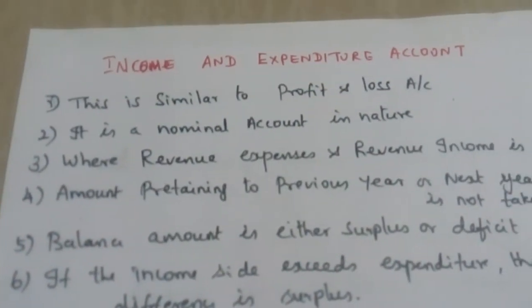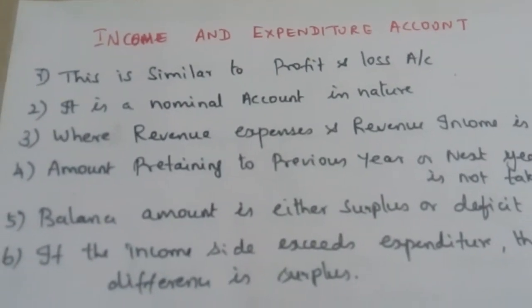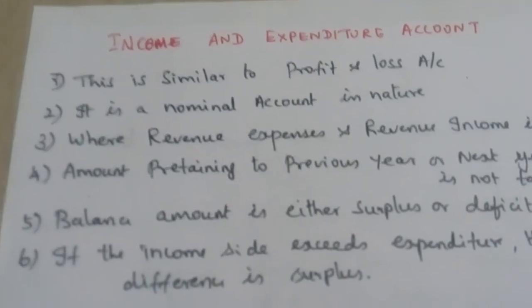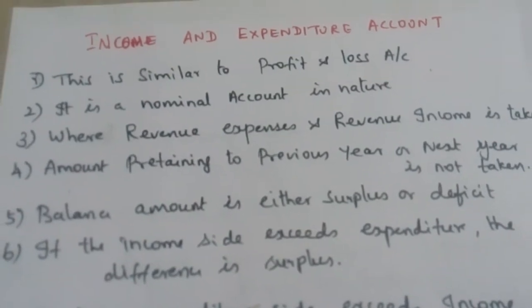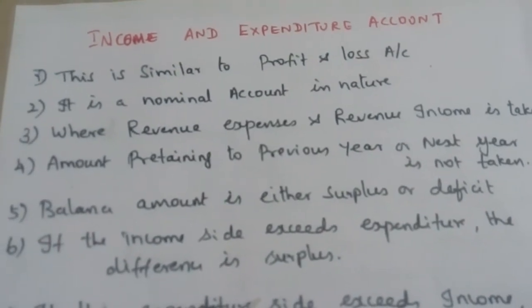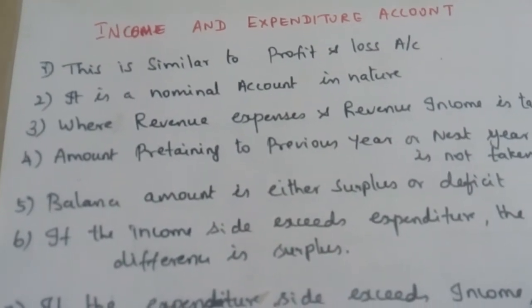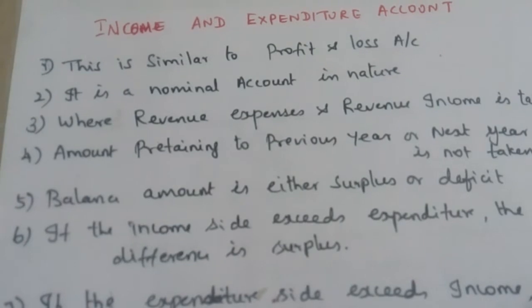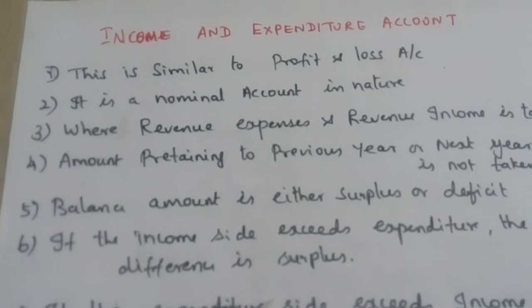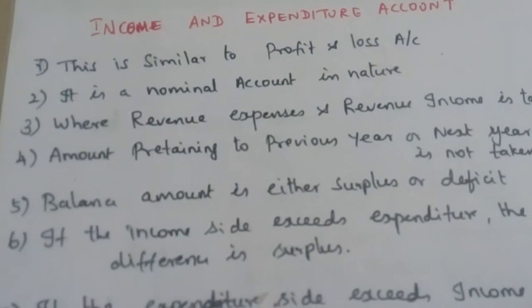Let me tell you how to prepare the income and expenditure account in the not-for-profit organization. Already, we have seen about receipts and payments account, the need for the receipts and payment account, and also the steps to prepare the receipts and payment account. In the case of trading organization, preparation of final accounts may be for trading account, P&L account, and the balance sheet. But in the case of not-for-profit organization, the final accounts include the receipts and payment, income and expenditure, and finally the balance sheet.